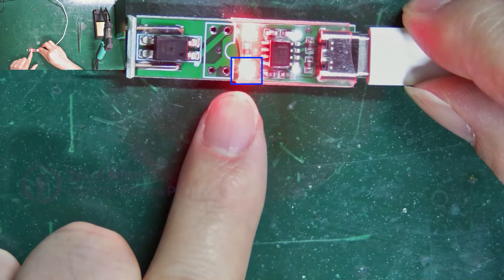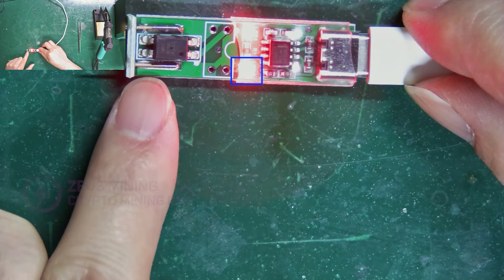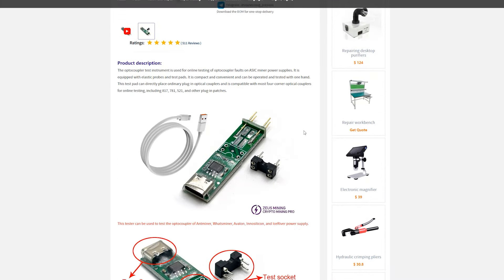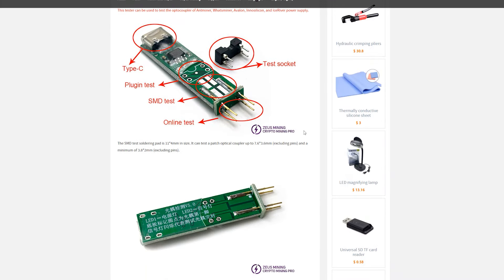Again, the indicator light is flashing, indicating that it is not faulty. That's it for the various methods to use this optocoupler tester. Thanks for watching.